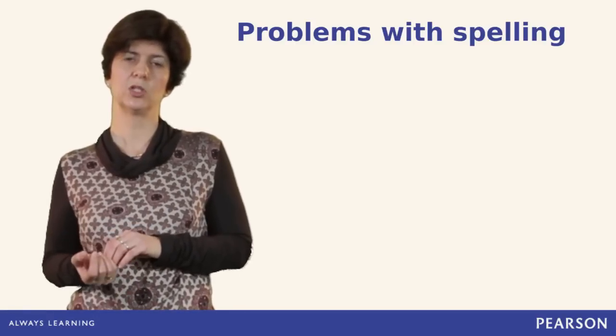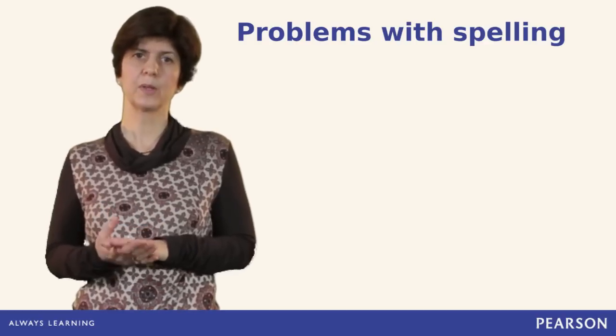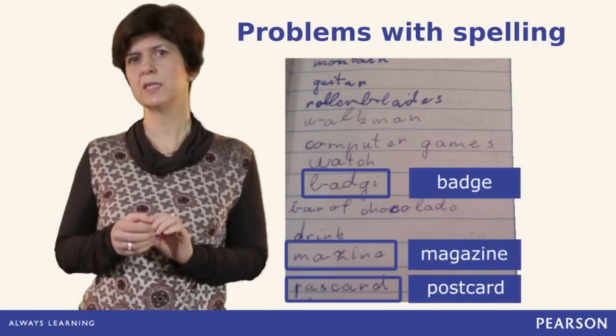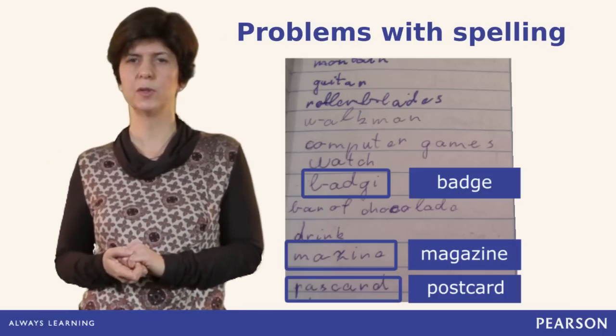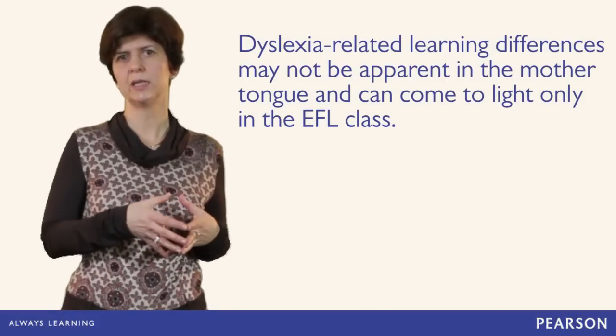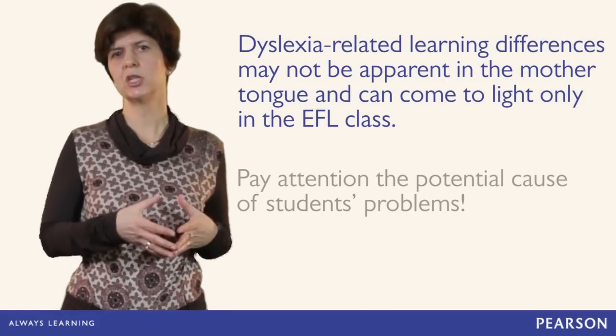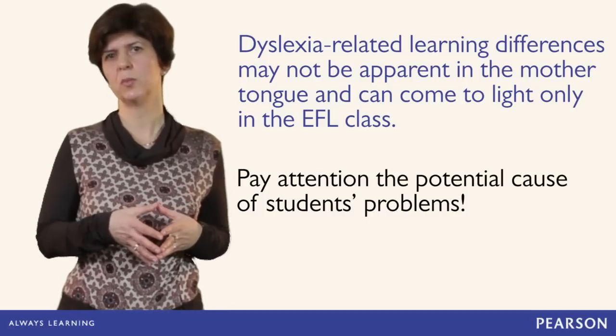Another difficulty that can be observed — which we can also see in the student's first language — is problems with spelling words correctly. This is especially noticeable in the case of English, where a sound can be denoted by different letters and letter combinations, and one letter can stand for different sounds. If the student's first language is more transparent than English, it might often happen that dyslexic students do not experience big difficulties with reading and spelling in their mother tongue, or they successfully overcome them with efficient strategies. Therefore, it is often in the English class where dyslexia-related learning differences come to light, and language teachers' responsibility is high in noticing the potential cause of students' problems.